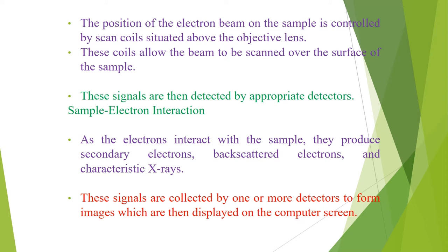In the sample-electron interaction, the scanning electron microscope produces images by scanning the sample with a high-energy beam of electrons. As the electrons interact with the sample, they produce secondary electrons, backscattered electrons, and characteristic X-rays. These signals are collected by one or more detectors to form images, which are then displayed on the computer screen.